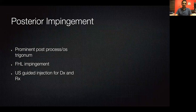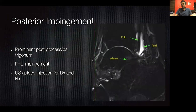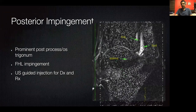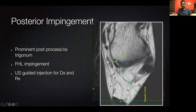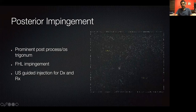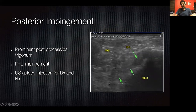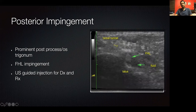Posterior impingement is common in cricketers who have prominent os trigonums impinging on the flexor hallucis longus tendon sheath. You can see the prominent os trigonum, the FHL tendon sheath, and fluid posteriorly; on MRI there's impingement from the prominent posterior talar process. On ultrasound, using a lateral approach, get a needle right near the FHL tendon sheath and inject along it. We use this often for diagnostic and therapeutic cases of patients with posterior impingement.